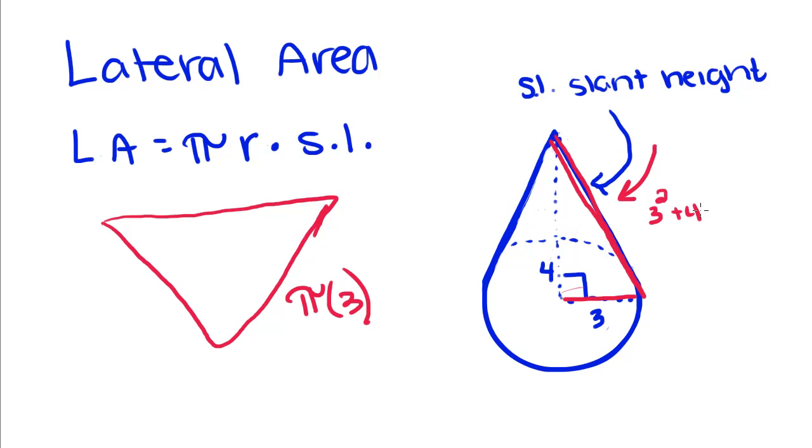So 3 squared plus 4 squared equals x squared, 9 plus 16 is equal to x squared, x squared is equal to 25, we take the square root of both sides, we get x is equal to 5.